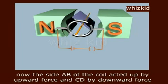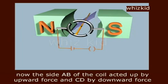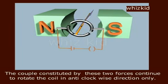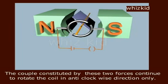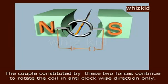Now, the side AB of the coil is acted upon by upward force and CD by downward force. The couple constituted by these two forces continues to rotate the coil in anti-clockwise direction only.